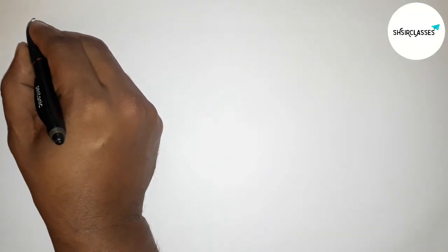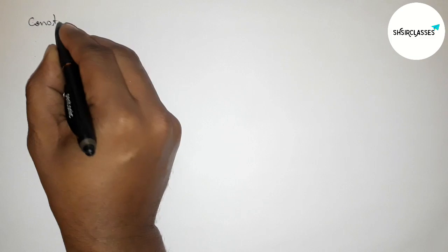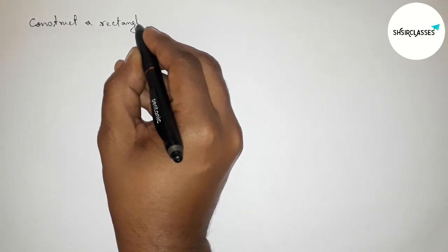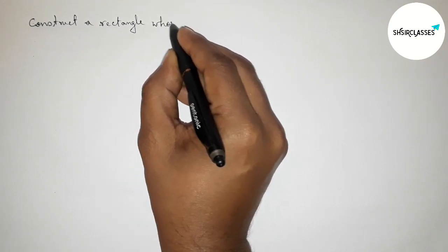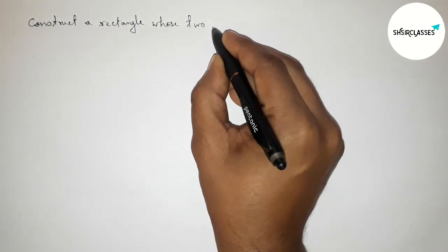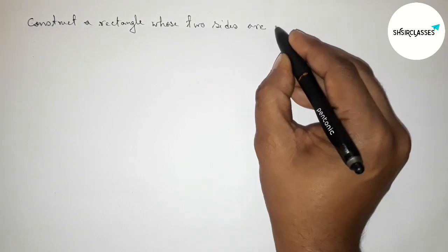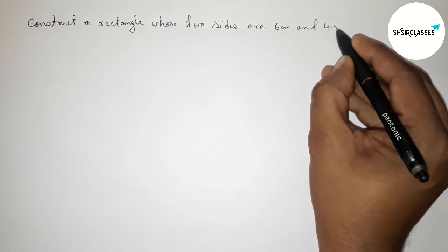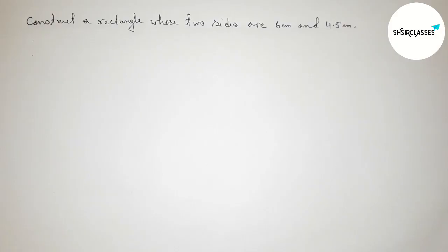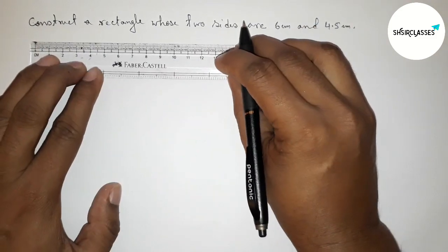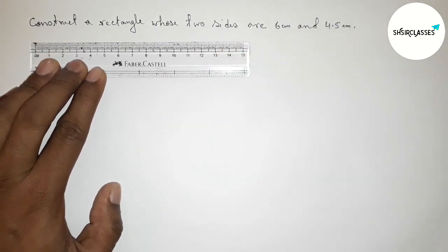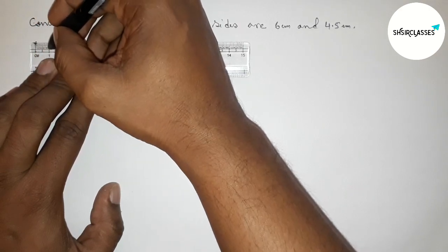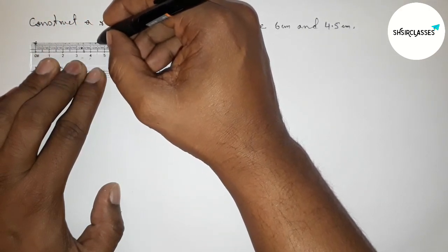Hi everyone, welcome to SI Share Classes. Today in this video we have to construct a rectangle whose two sides are 6 centimeter and 4.5 centimeter. Please watch the video till the end. First of all, drawing here the given two sides — first drawing here a 4.5 centimeter line segment.